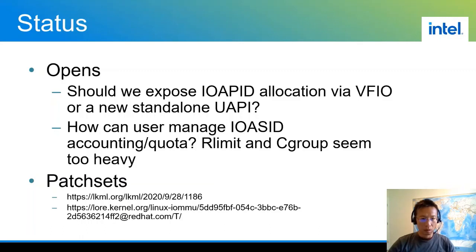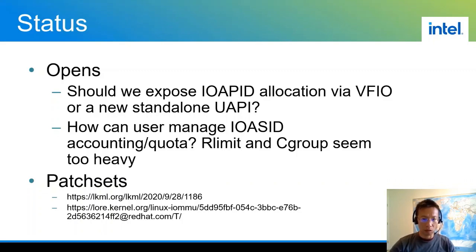Also, how can a user manage IOACID quota from a system admin perspective? We have done some research on using rlimit or cgroup, but those seem to be too heavy-handed for a simple PASID allocation quota management.